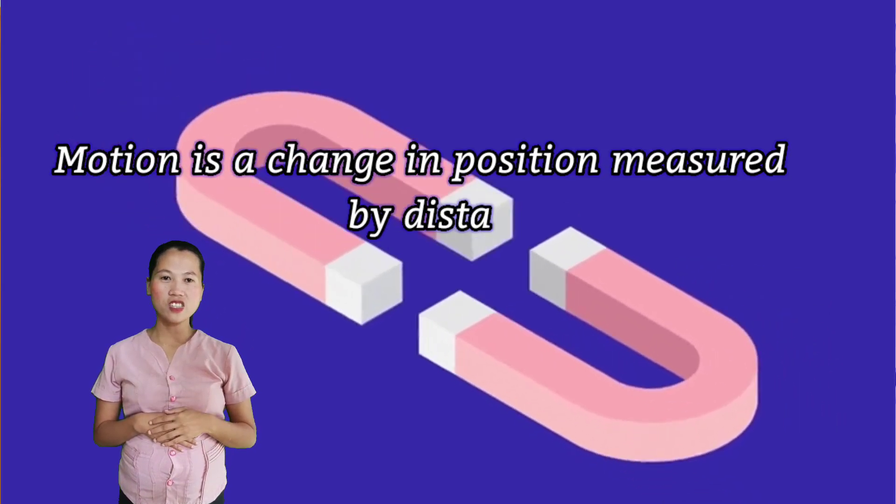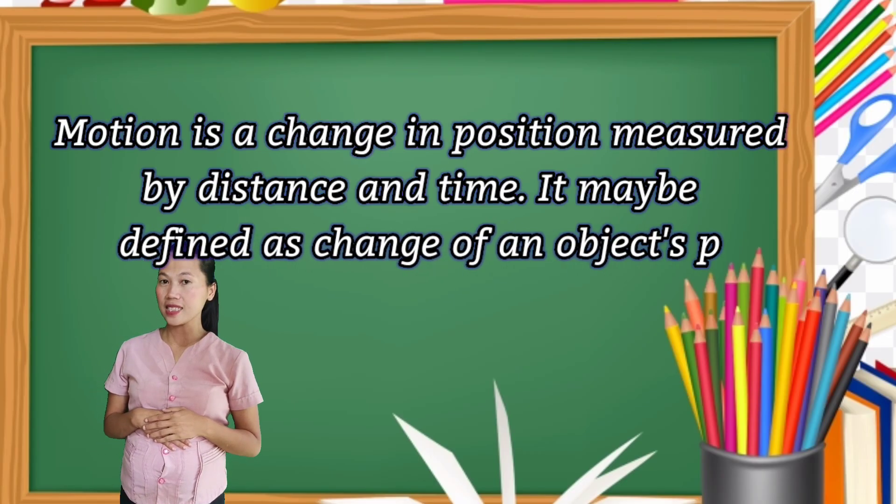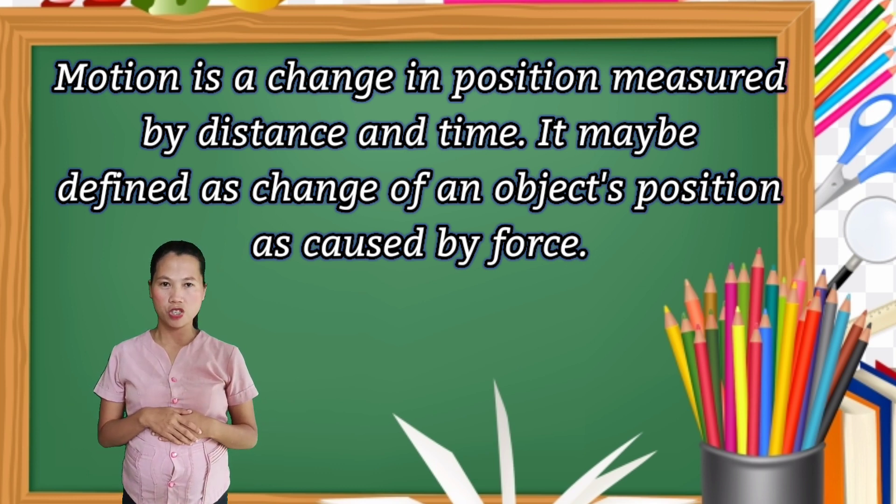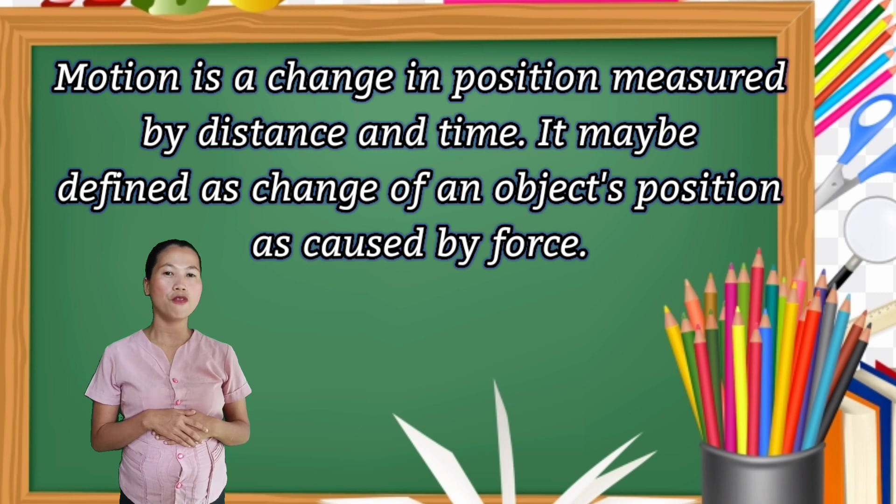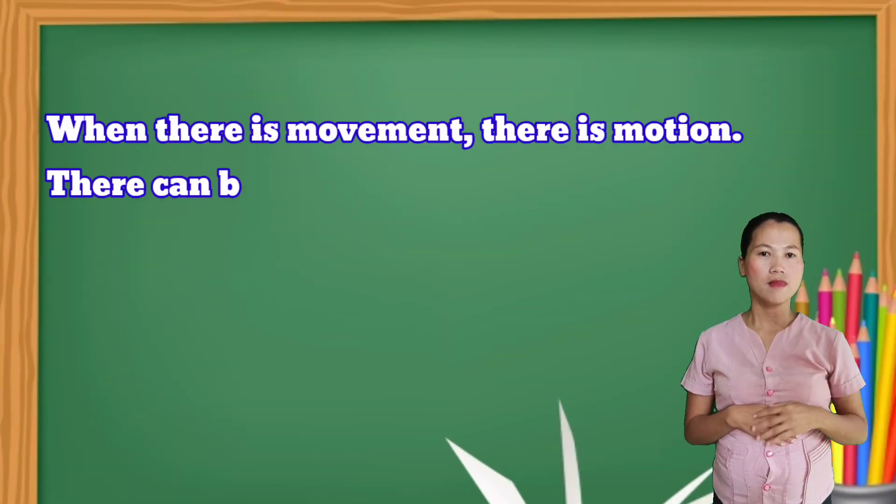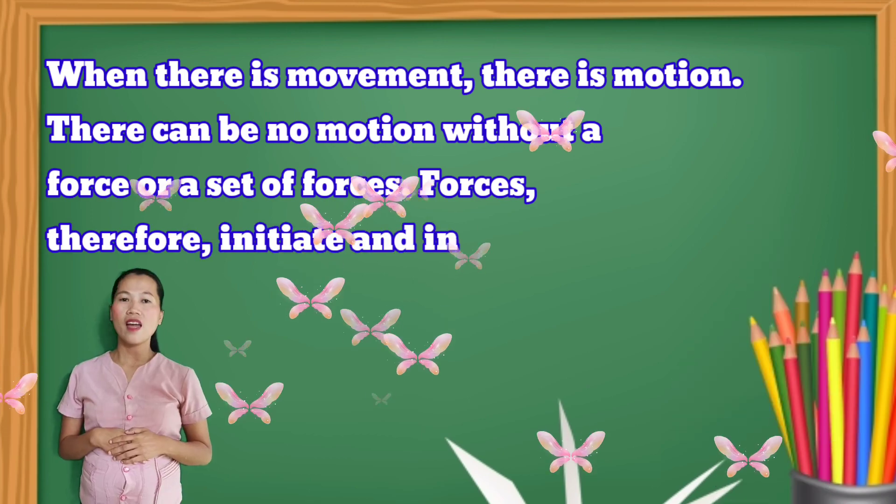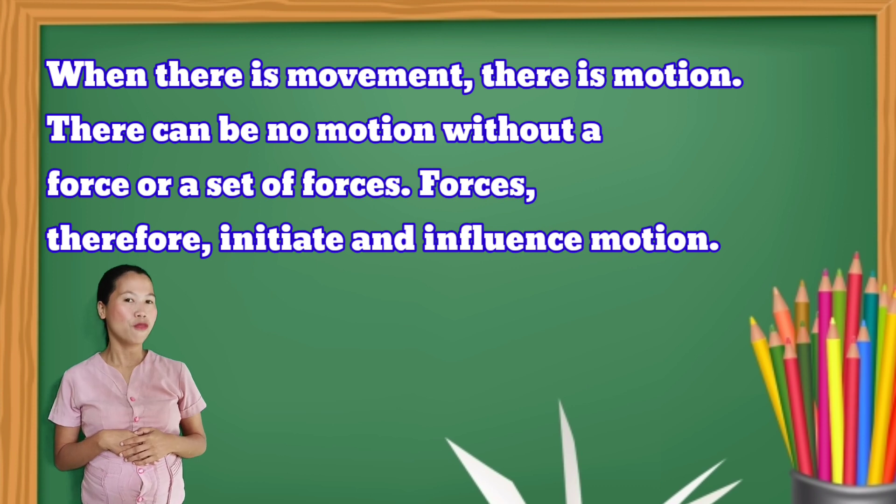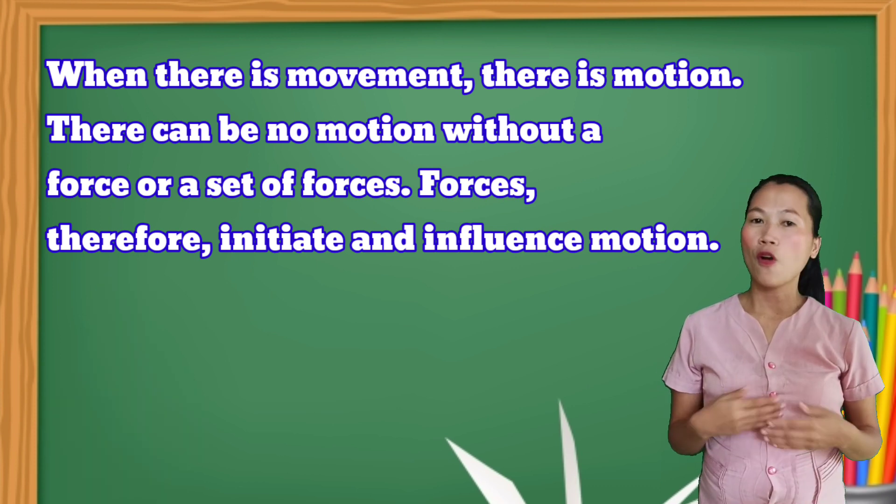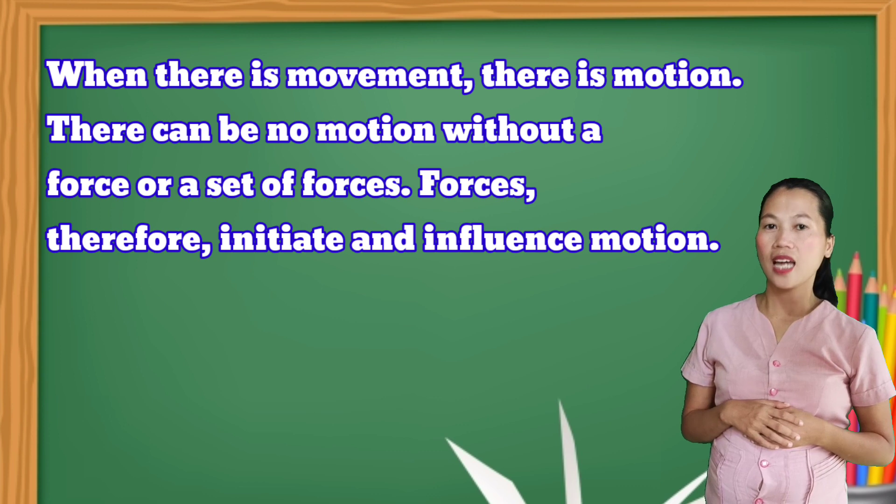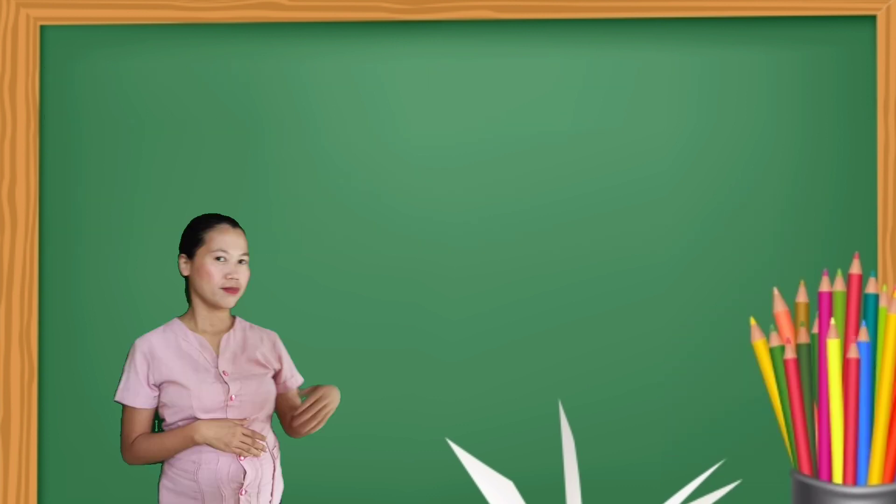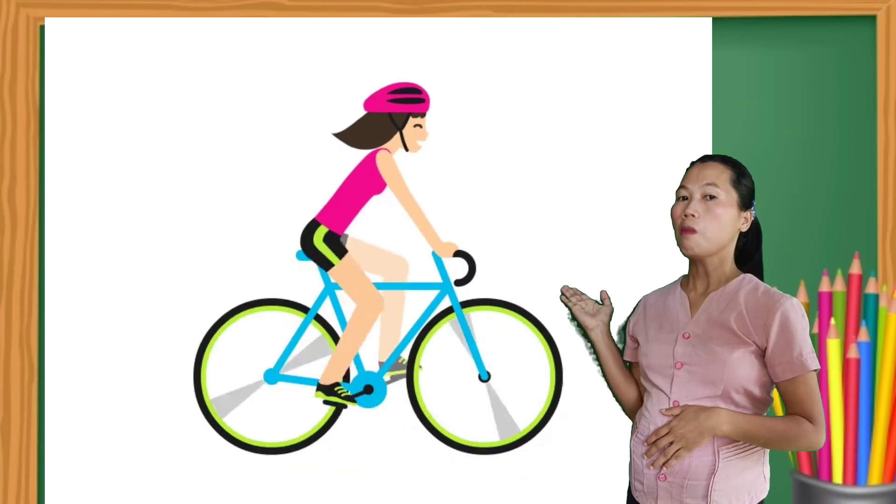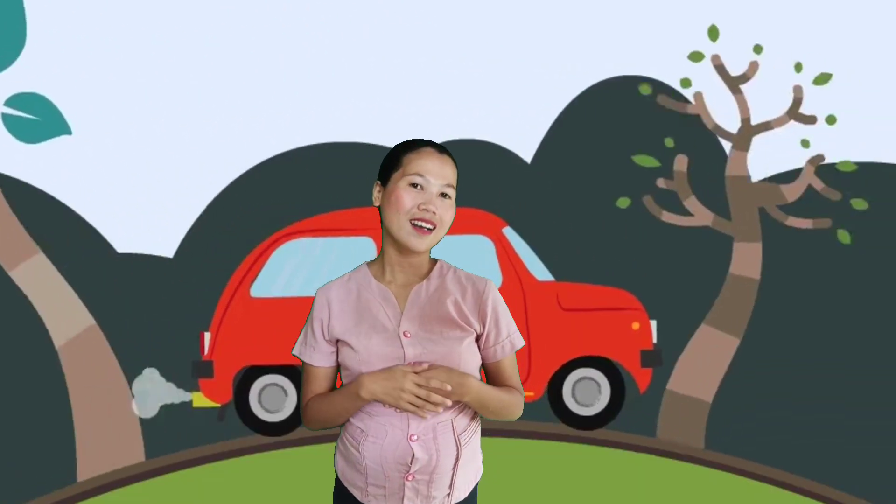Motion is a change in position measured by distance and time. It may be defined as change of an object's position as caused by force. When there is movement, there is motion. There can be no motion without a force or a set of forces. Forces, therefore, initiate and influence motion - a person's motion, a bicycle's motion, a car's motion, and train's motion.